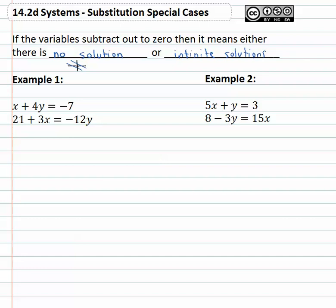Or there are infinite solutions. And that's where the graphs were actually the same line, right on top of each other.